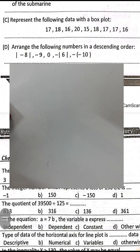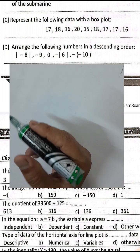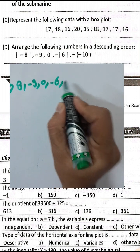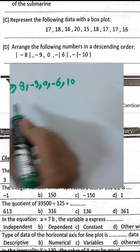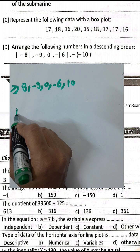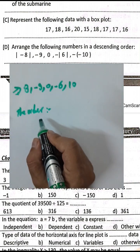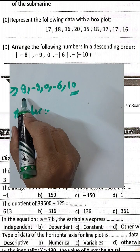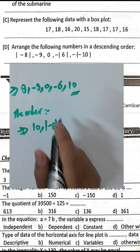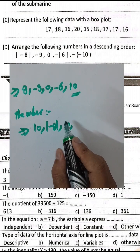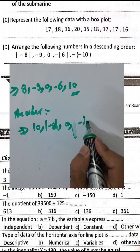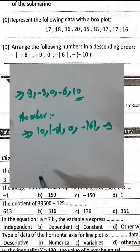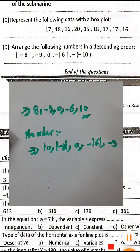Question letter D: Arrange the following numbers in descending order. First find the result of each absolute value: negative 8 gives 8, negative 9 gives 9, 0 stays 0, negative 6 gives 6, and negative 10 gives 10. Arrange in descending order from greatest to smallest: 10 (which was negative 10 in absolute value), then 8 (absolute value of negative 8), then 0, then negative 6 (absolute value 6), then negative 9.